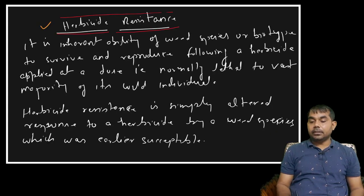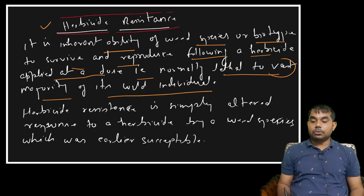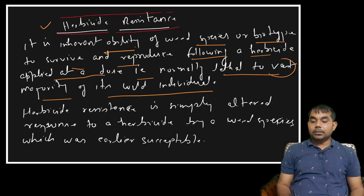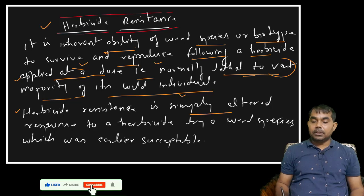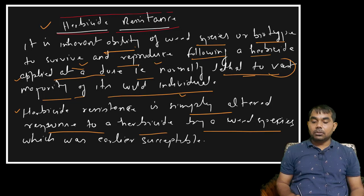Herbicide resistance is the inherent ability of a weed species or biotype to survive and reproduce following a herbicide applied at a dose that is normally lethal to the vast majority of its wild individuals. Resistance develops because of the inherent ability of every species — the weed was previously susceptible, but now shows resistance due to changes in genetic makeup. Wild individuals of that species are killed at a particular dose, but the resistant biotype survives because of certain genetic changes.